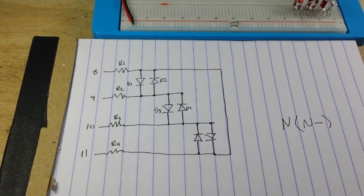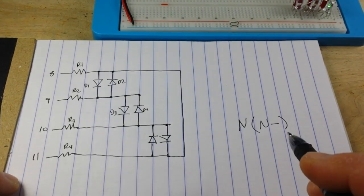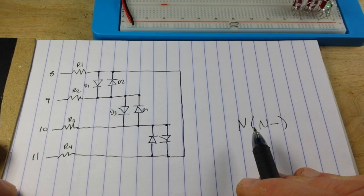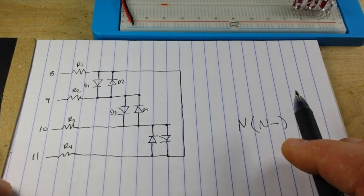Okay, so here's our circuit diagram, but first let's talk about the formula for figuring out Charlie plexing. And it's called Charlie plexing because it was discovered by a guy named Charlie Allen somewhere in the 90s.